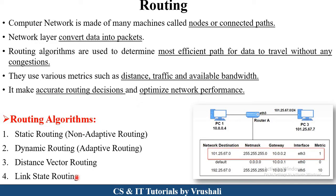There are a total of four types of routing algorithms: static routing, dynamic routing, distance vector routing, and link state routing. In this session we will discuss static and dynamic routing. Let's discuss them one by one.